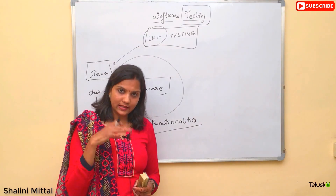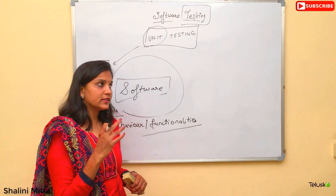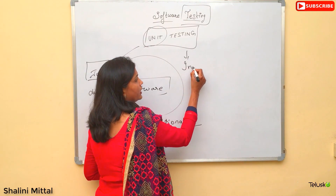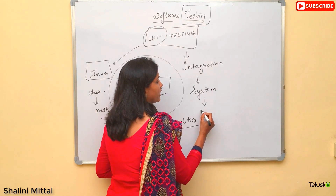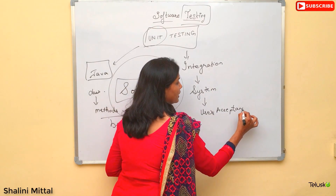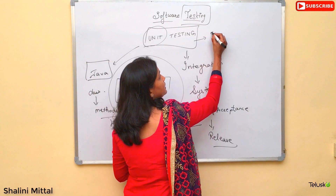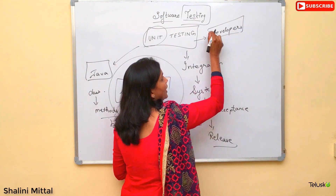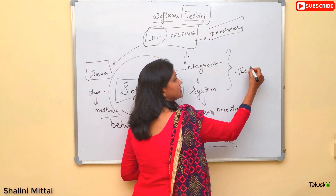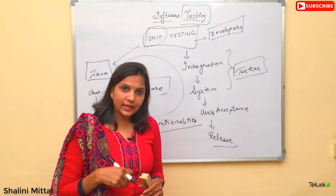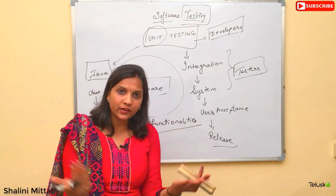Before dwelling into JUnit testing, let's have a quick overview of all available life cycle phases in software testing. We have unit testing, integration testing, system testing, user acceptance testing, and finally the release. Unit testing is done by the developer — developers are responsible for providing unit testing within their applications. Integration testing and system testing are handled by testers who integrate all modules one by one, test them, and then test the whole system as an integrated whole.